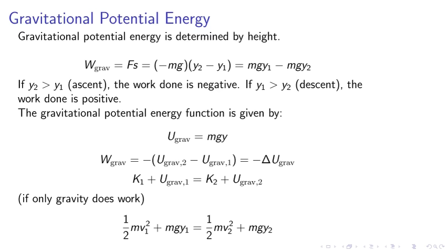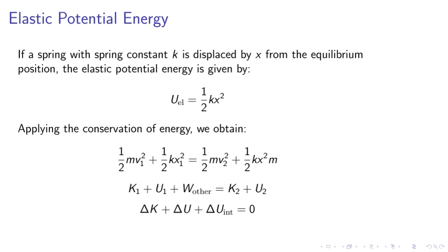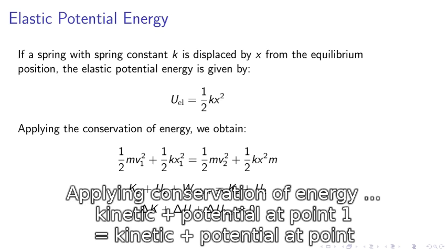W_grav equals negative. For example, if we consider spring elastic potential energy, we can consider a spring with spring constant k displaced by x from the equilibrium position. The potential energy is given by U equals half k x squared.